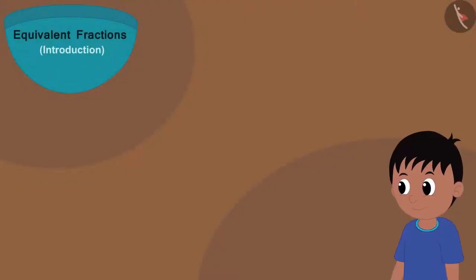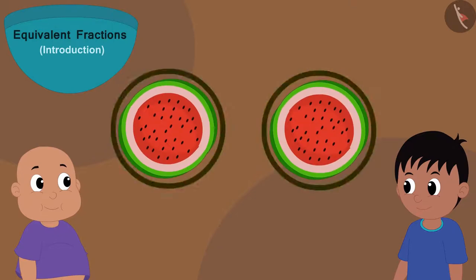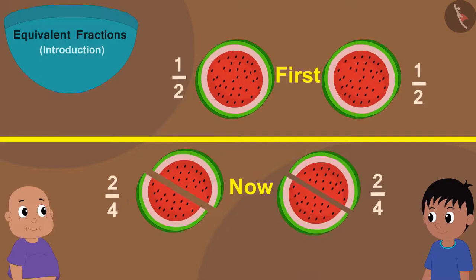Earlier, Raju and Bablu were getting one part each out of two equal parts. And now, there are four parts of the watermelon and they both are getting two parts each.